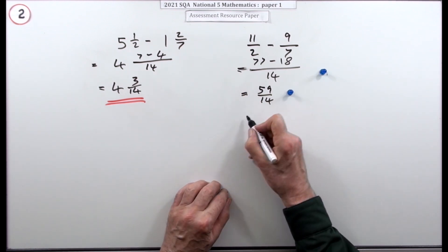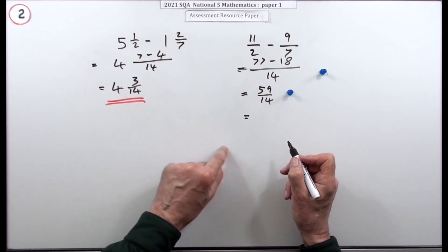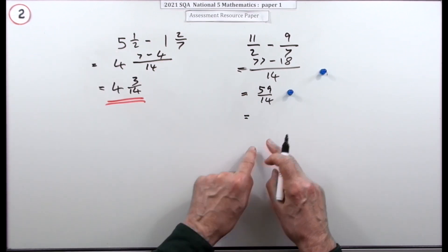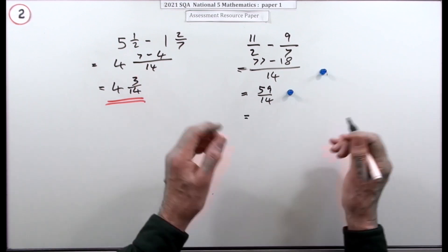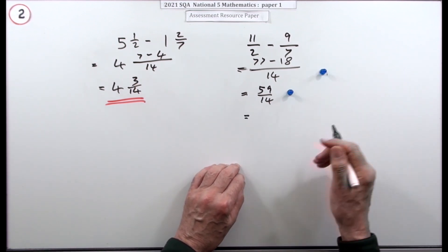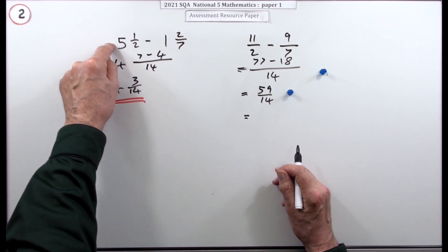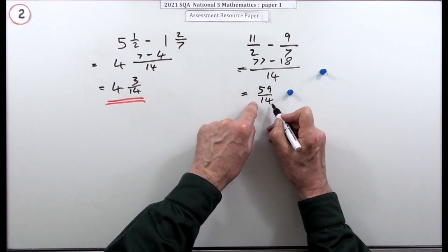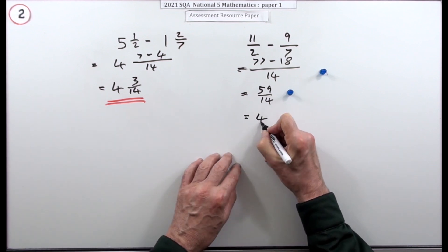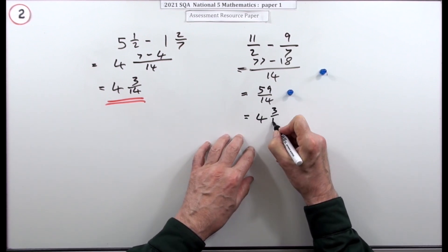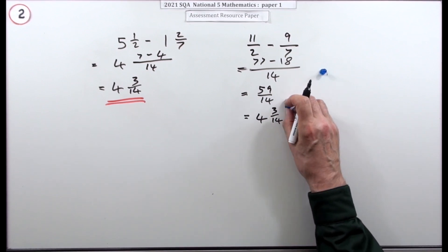You shouldn't really leave the answer as an improper fraction unless there's a specific reason — like an index where you need to see the power. Since the original numbers were mixed numbers, the answer should be a mixed number too. You'd figure how many 14s are in 59: that gives four remainder three, so the answer is four and three fourteenths. The mark should really be there, but they let you off earlier.